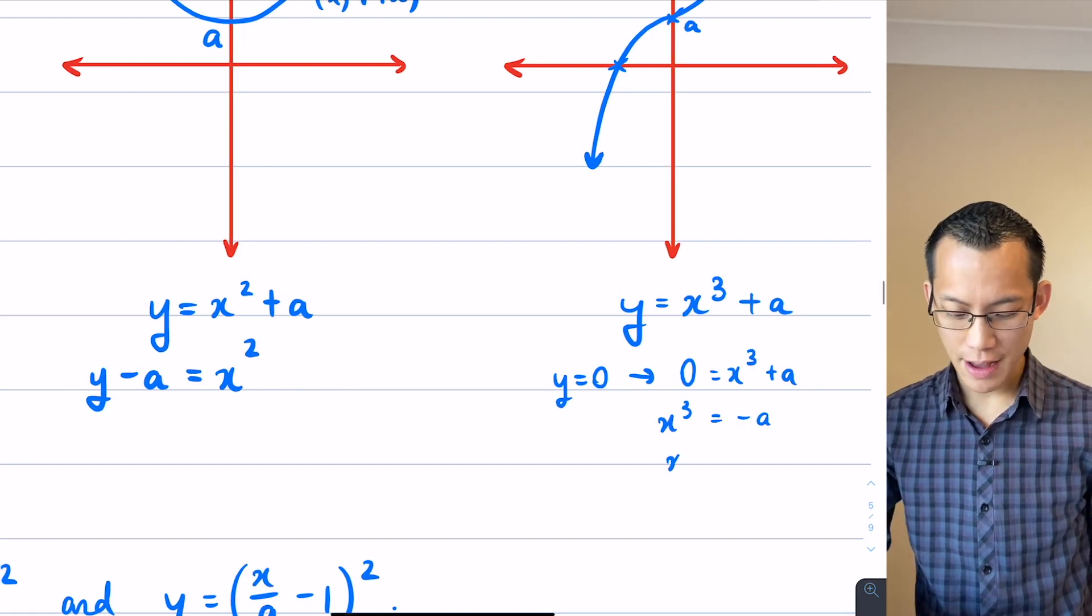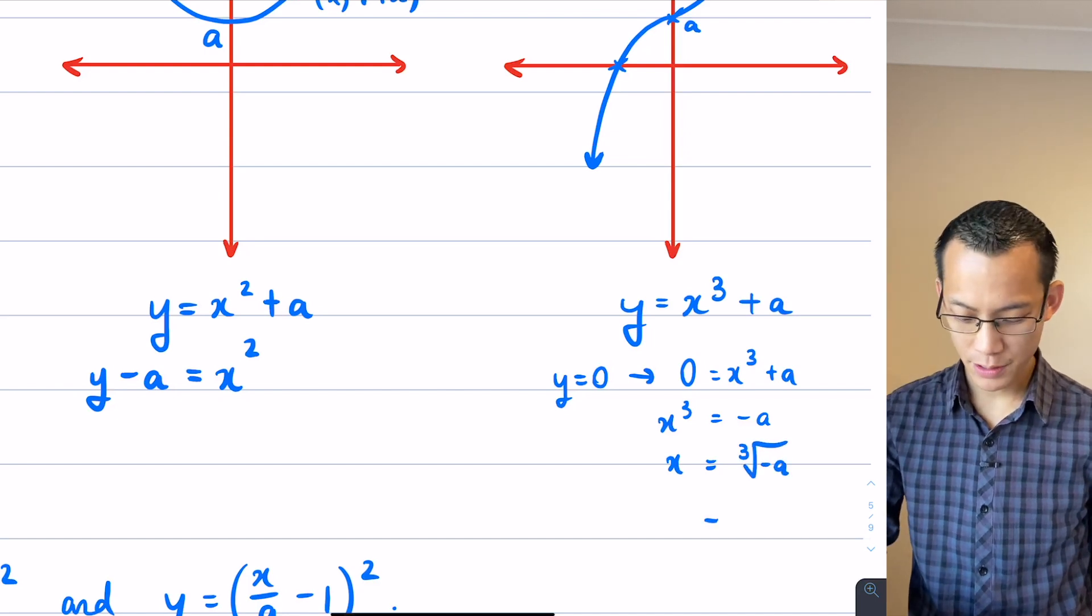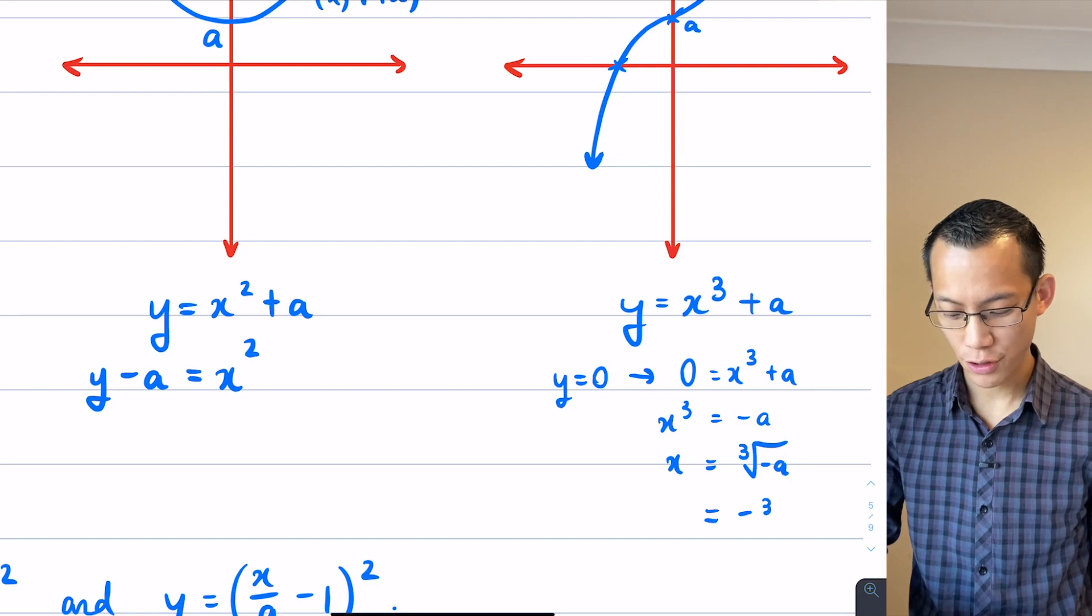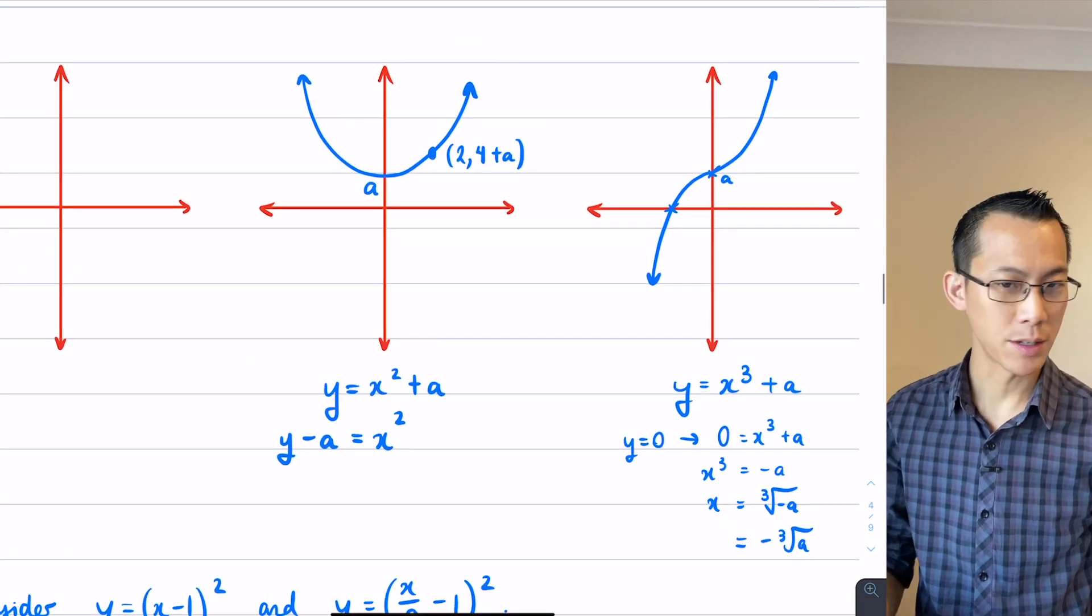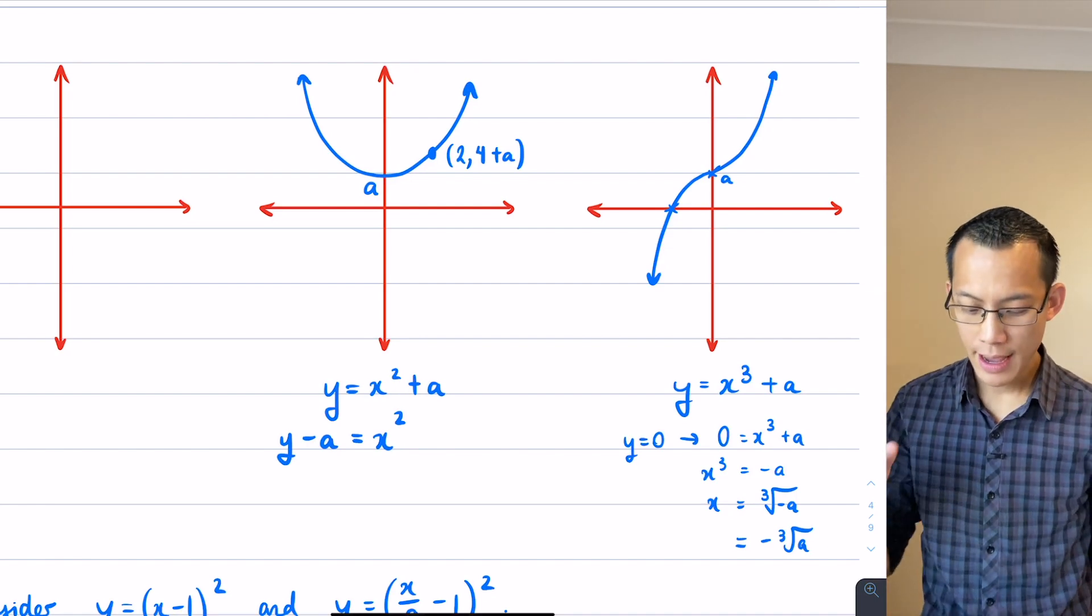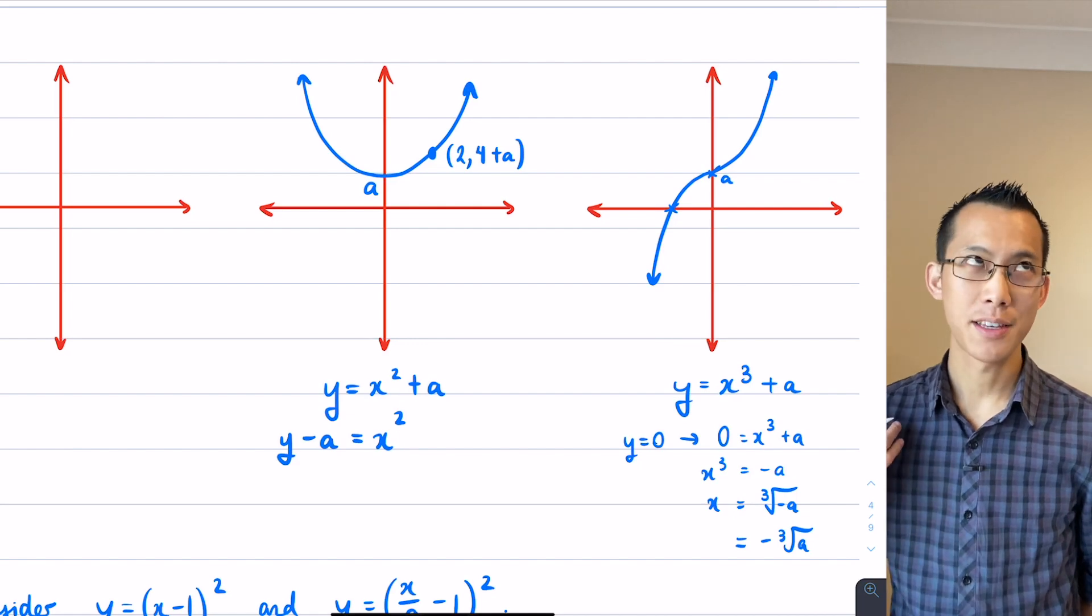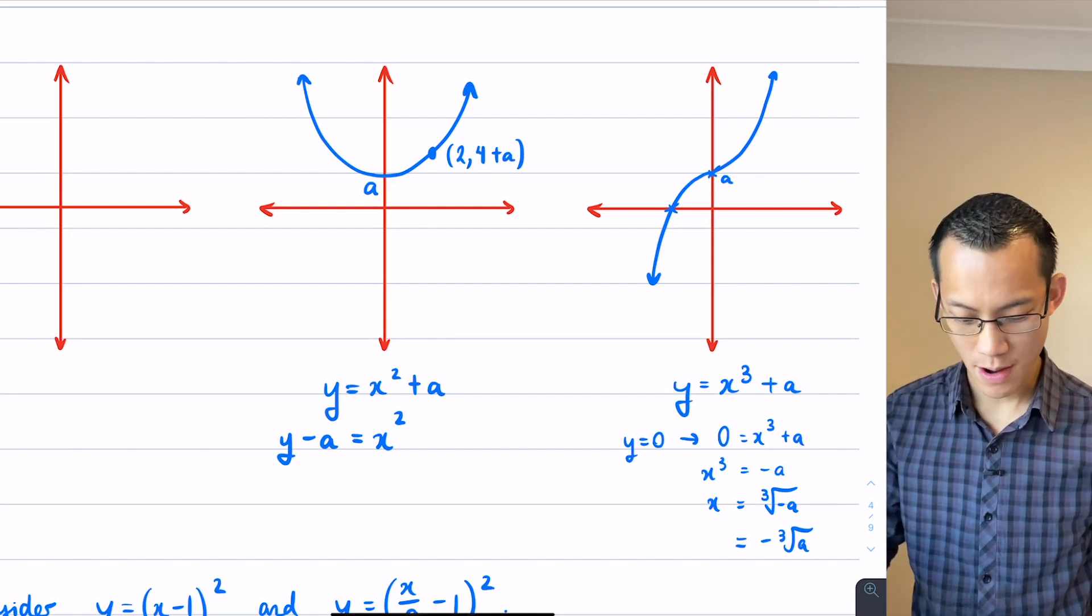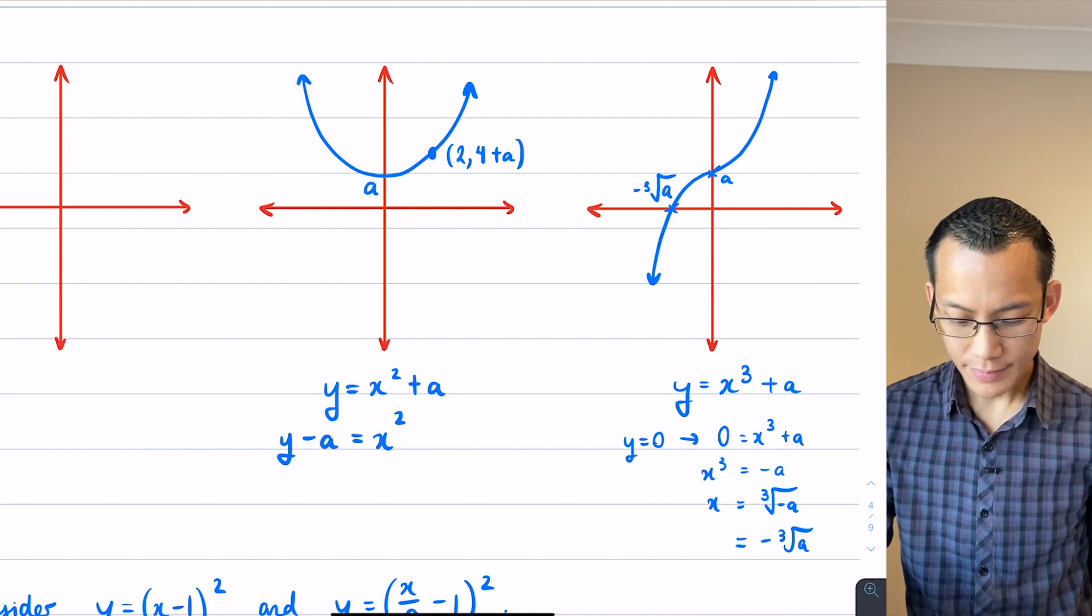And so if I want to find just x, it's going to be the cube root of negative A, which happens to also be the same as the negative cube root of A. So this is going to be my new intercept. And whatever polynomial you're going to get, it's going to be that method of substituting y equals 0 to get my x intercept and substituting x equals 0 to get my y intercept. So let's go ahead and we will mark that in.